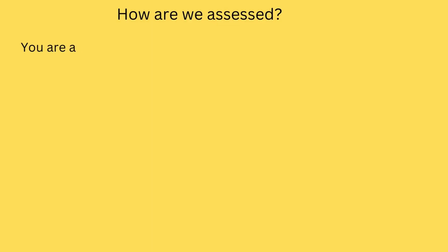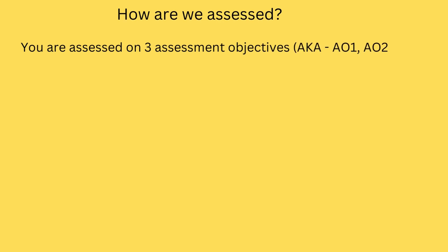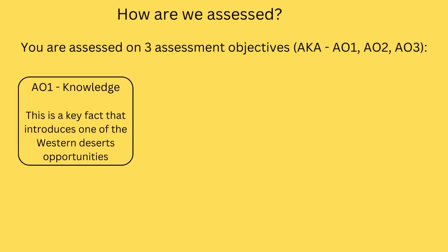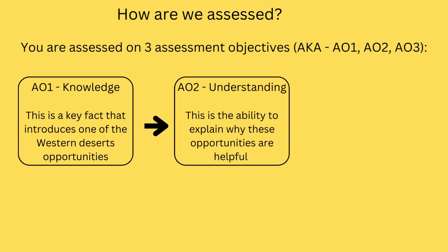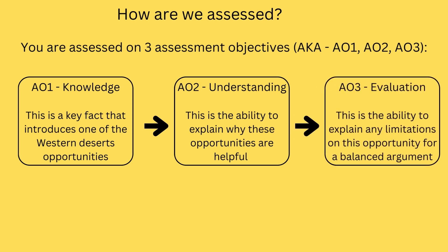Before we answer this question we need to know how we are going to be assessed on a 'to what extent' mark question. There are three assessment objectives, often referred to as AO1, AO2 and AO3. We first need a piece of knowledge about the Western Desert opportunity. Once we've done that we need to show understanding and explain the effectiveness of that opportunity. Once we have explained, we then need to evaluate by providing limitations to these opportunities.